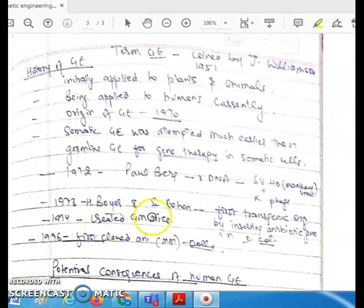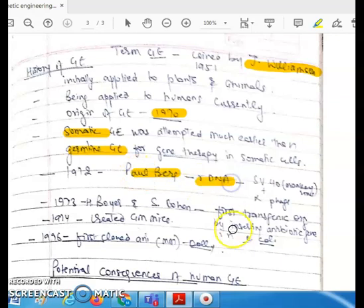Next is the history of genetic engineering. The term was coined by Johnson Williamson in 1951. It dates back to 1970-1978 origin of genetic engineering. Somatic genetic engineering was attempted much earlier than germline genetic engineering. In 1972, Paul Berg was the first one to make recombinant DNA. In 1973, Boyer and Cohen produced the first transgenic organism by inserting antibiotic gene in E. coli.